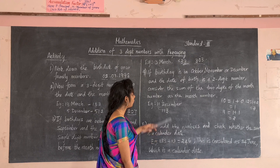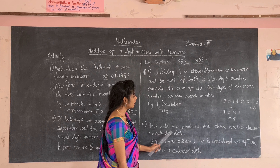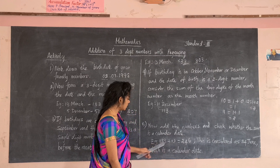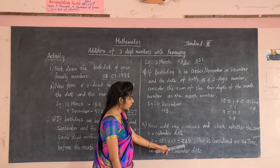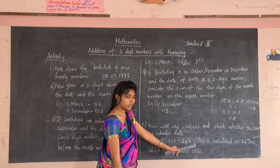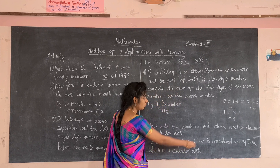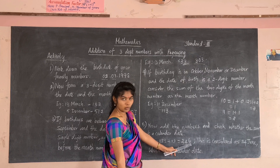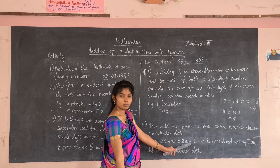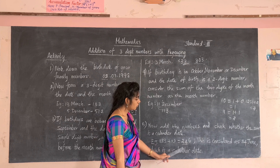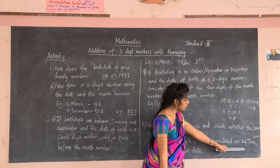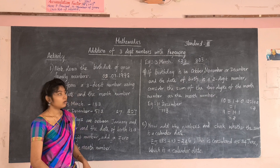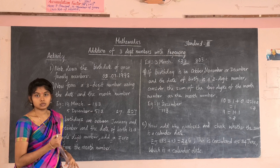Now add the numbers and check whether the sum is a calendar date. For example, 133 plus 113 equals 246. Take the first two digits as the day (24) and the last digit as the month (6 = June), giving 24th June. Check whether 24th June is a valid calendar date — and it is! This is how to do the activity. Take the birth dates of your family members and follow this method. Thank you, students.